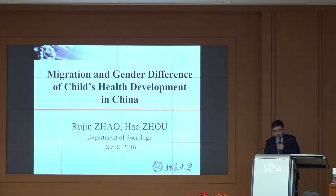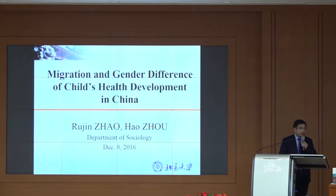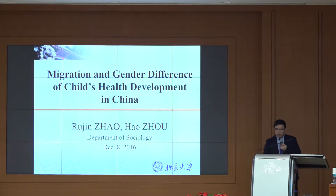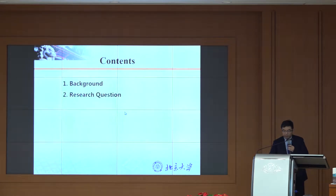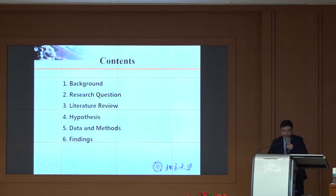We use this data to compare four groups of children: resident children in rural areas, resident children in urban areas, migrant children, and left-behind children whose parents have left and left them behind — a very large number of children in China. The research focus is on personal development and the data is from the CFPS. My presentation will include six parts: background, research questions, literature review, hypothesis, data and methods, and findings, followed by conclusion and discussion.